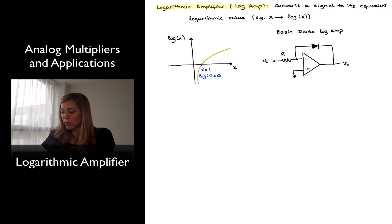This is a basic implementation of a log amp, which is the basic diode log amp. Notice that it's connected similar to an inverting amplifier, except it has a diode connected in the feedback path as opposed to a resistor. Now notice that because there is no current flowing into the input terminals of an ideal op amp, I'm going to make the assumption that the current flowing through the resistor is equal to the current flowing through that diode.